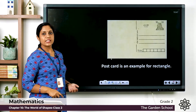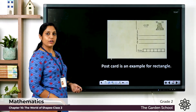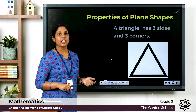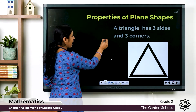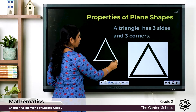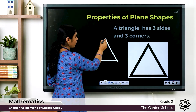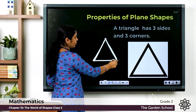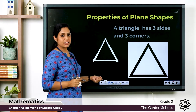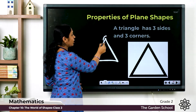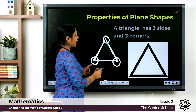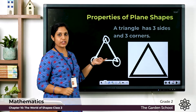A postcard is an example of a rectangle. Now let's learn about a triangle. A triangle has three sides — one, two, and three — and in the same way it has three corners also. So a triangle has three sides and three corners.